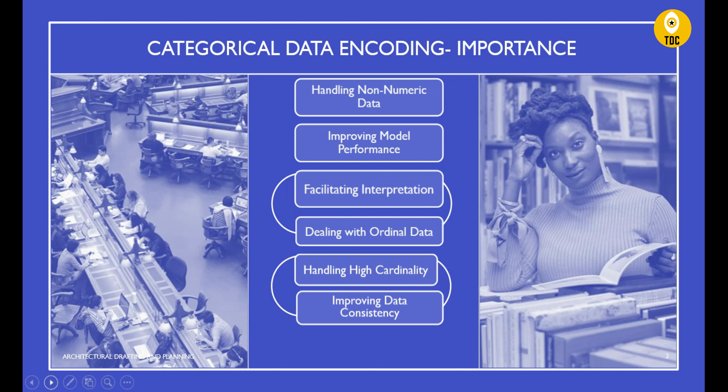That is what categorical data encoding is all about. The first key point is handling non-numerical data. Machine learning algorithms like linear regression, SVMs, and neural networks require input features to be numeric. Categorical variables consisting of labels or categories need to be converted into a numerical format; otherwise these algorithms won't work as expected, since they are fundamentally mathematical models that require numeric data.